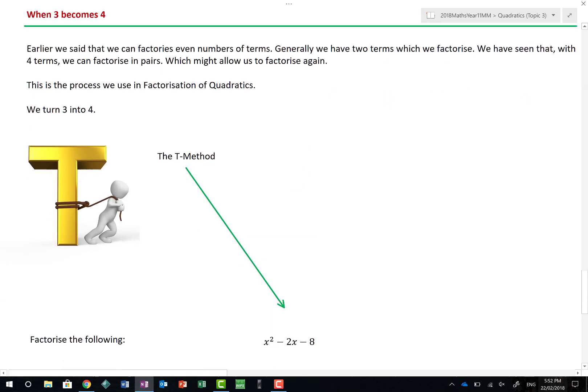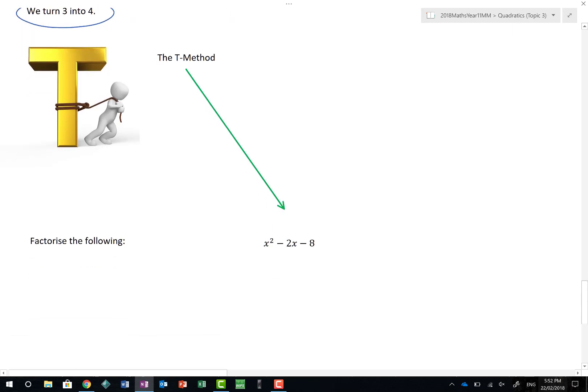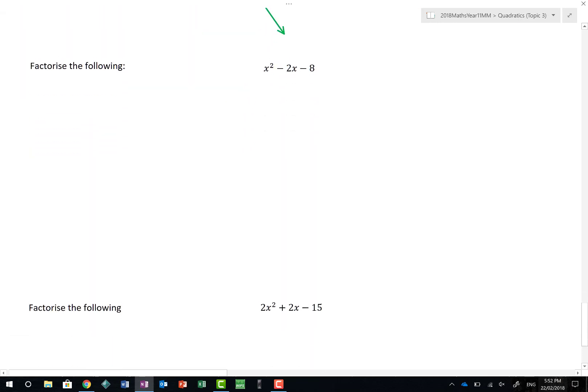This is where we get to what I think is the most amazing part of this, which is called the T method. We have already said that when we have 2 terms, we can happily factorize them. When we have 4 terms, we can factorize them in pairs. But what happens when we have 3 terms? I call this the T method, and it was what I was taught at school. How many terms do we have here? We have 3. I want to turn 3 into 4. I need to turn 3 into 4 because I can't currently factorize this.